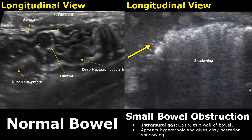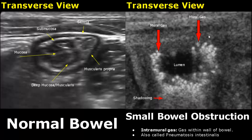Intramural gas is another feature of obstruction. Gas is found within the bowel wall — it will appear hyperechoic and has dirty posterior shadowing. Gray shadowing is seen posterior to the gas. Here is a transverse view of intramural gas; you can see it much better in this view. Gas is found within the walls, and here is the bowel lumen.